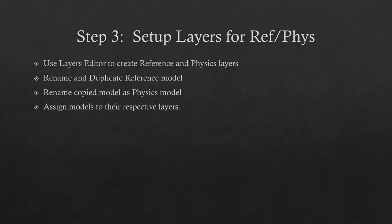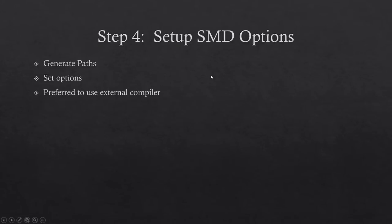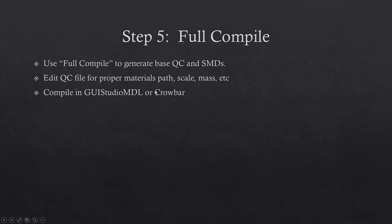Step three, we'll set up layers for reference and physics. This is important for Mesa to actually know what needs to be compiled as what. Step four, we'll set up SMD options — basically what we're going to tell the compiler what we want it to do, as well as generate the paths where it exports stuff. We're going to prefer using an external compiler for this workflow until it becomes more stable.